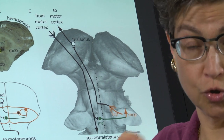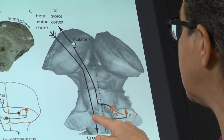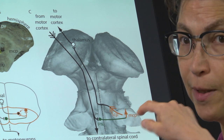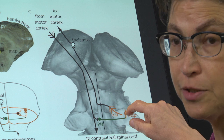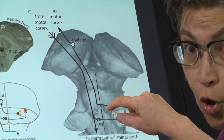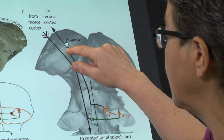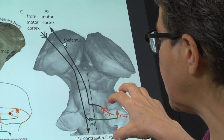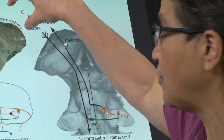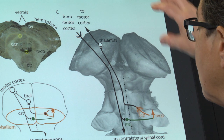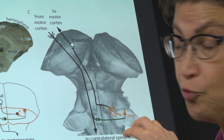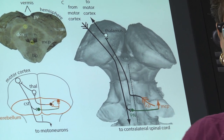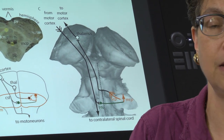Information from the motor cortex going down the corticospinal tract or corticobulbar tract sends a copy of what it wants to do into the cerebellum. The cerebellum processes that information and sends its instructions on how to carry out movement smoothly back to the motor cortex via the thalamus. This thalamus is dealing with the contralateral motor cortex, so it is dealing with ipsilateral movement.